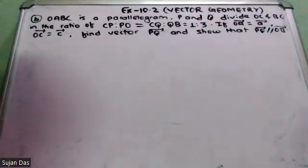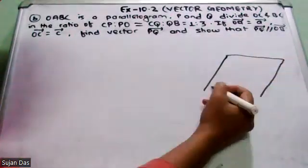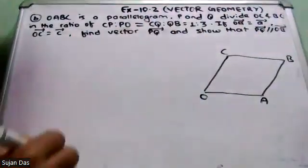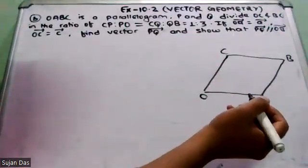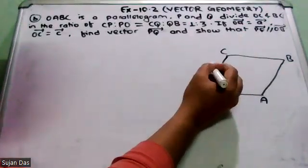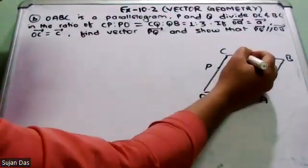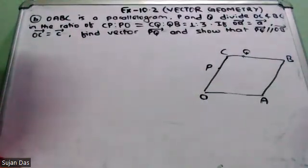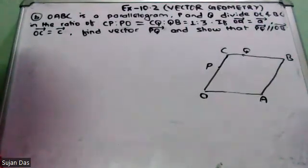So the position is that OABC is such that OA, OB, OC are lines. P and Q divide OC and BC respectively. CP is to PO is to QB is to 3.